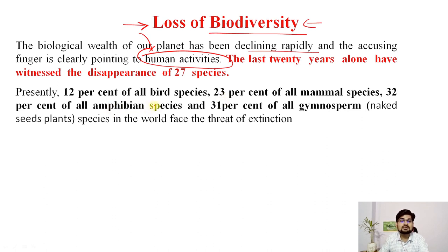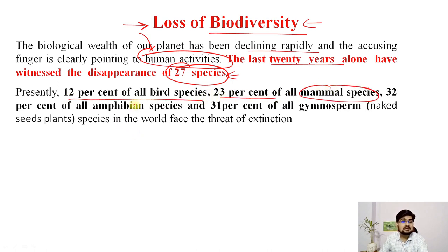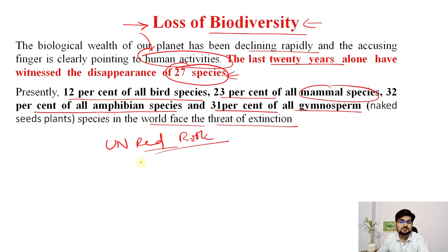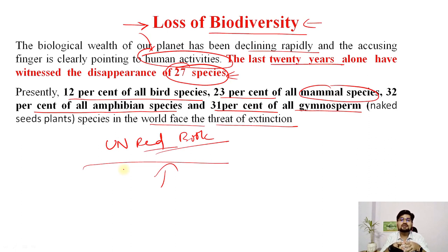In the last 20 years alone, we have witnessed the loss of about 27 vital species. Presently, 12% of all bird species, 23% of all mammal species, 32% of all amphibian species, and 31% of all gymnosperms — plants whose seeds are naked, like pine trees — face the threat of extinction. The IUCN Red Book lists all threatened, endangered, and extinct species. In the anthropocene, human beings are aggravating the loss of biodiversity.